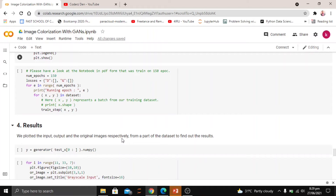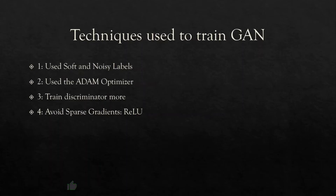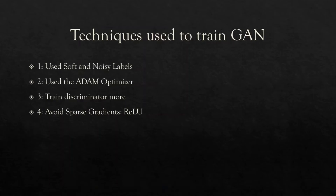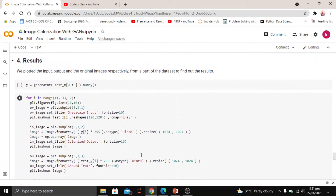The state-of-the-art techniques we implemented in this GAN model — also found in the literature and recommended by researchers — were: soft and noisy labels, Adam as optimizer, training the discriminator twice as often as the generator, and using ReLU as the activation function, which helps avoid sparse gradients.